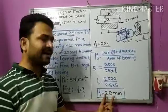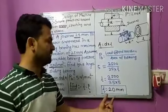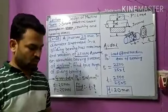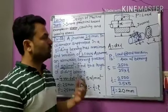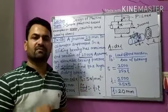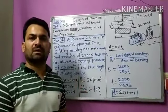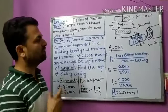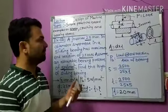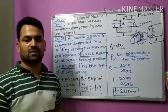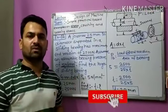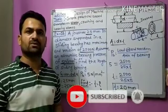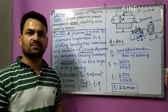That concludes both problems. In the first problem we found crushing stress and shear stress for a double riveted lap joint, and in the second problem we found the length of a sliding bearing using bearing pressure. If you liked this video, please share it and subscribe to the channel. Thank you.